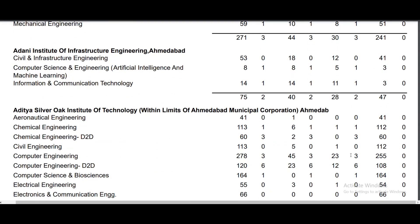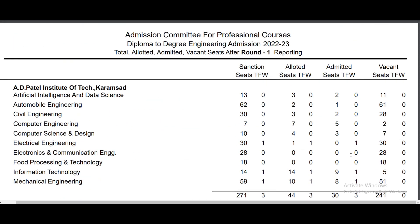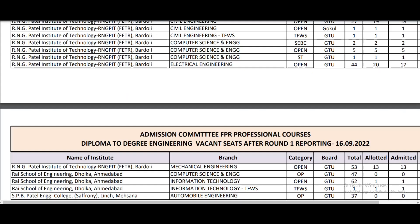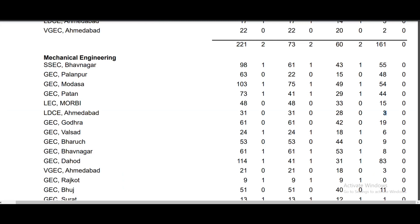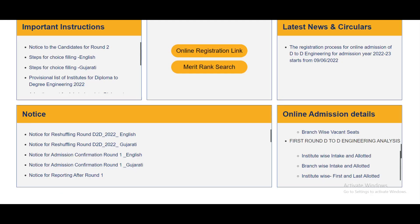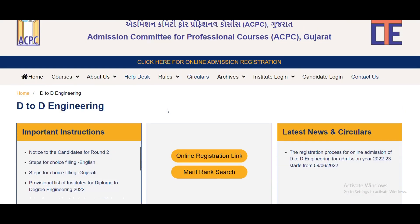There are many students from the first round. If you want to focus on choice-filling, go through all the PDFs, list some branches in your priority order, focus on the sequence, and then complete your choice-filling.